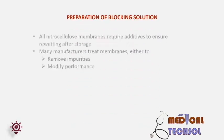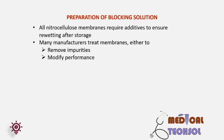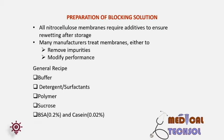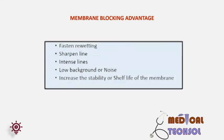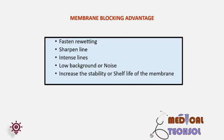Blocking solution preparation: all nitrocellulose membranes require additives to ensure re-wetting after storage. Nowadays the blocking process is often avoided by manufacturers as it is time-consuming. General recipes are: buffer, detergent, polymer, sucrose, and BSA 0.2% or casein 0.02% — the recipe varies from product to product. Advantages of membrane blocking: first, it re-wets faster during assay compared to non-blocked membrane; second, blocked membrane shows a sharper and more intense line; third, it lowers background or noise; fourth, it increases stability and shelf life.